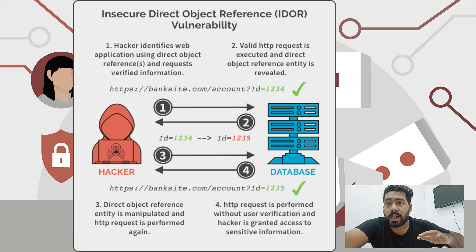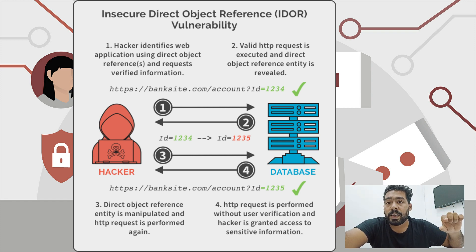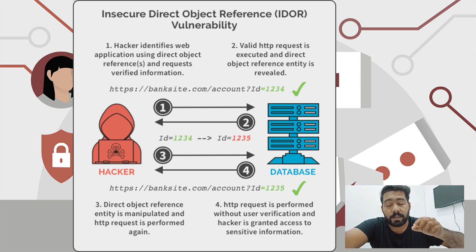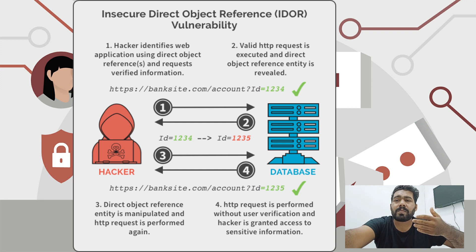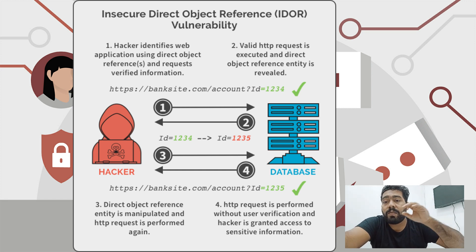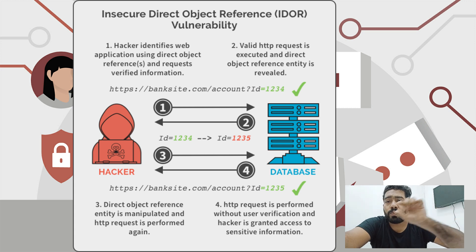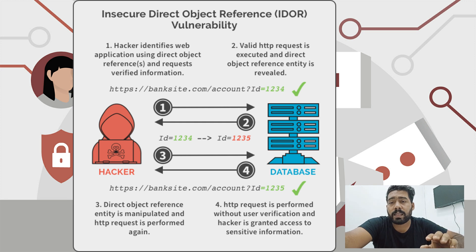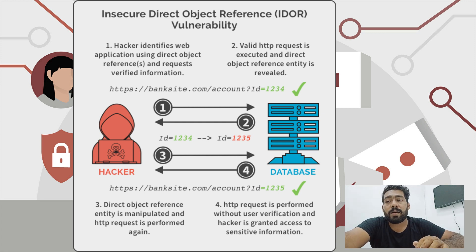A quick example: an API endpoint allows access to your bank balance at a URL like example.com/bankbalance/111, where 111 is the user identifier. A user should only access their own bank account. If you are able to access example.com/bankbalance/222 and see another user's balance, that is an IDOR vulnerability. If you find this kind of vulnerability, report it to the appropriate bug bounty platform.